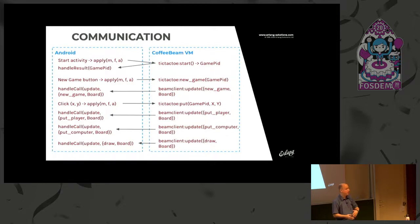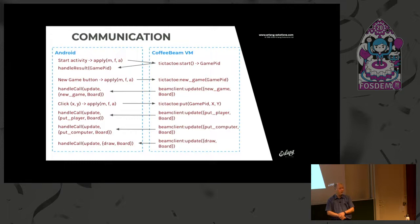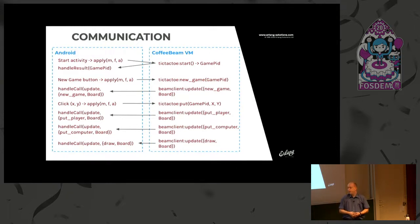The game logic is fully implemented inside one Erlang module in about 200 lines. This is the game flow and the computer's intelligence. There are also some special callback handling written inside the Android activity in Java to handle this functionality. But the VM is untouched — so the library provided by the Coffee Beam VM you can use as is.